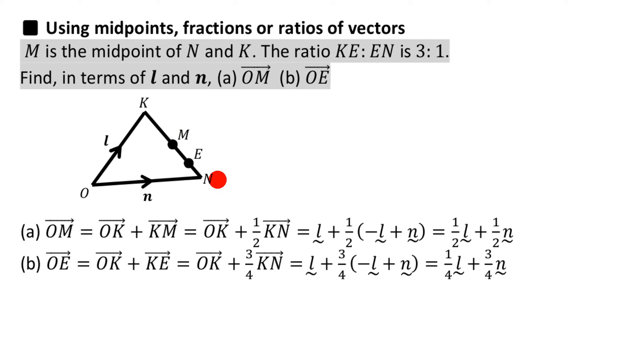This K to N line is split in this ratio 3 to 1. Now if you remember how ratios work, that basically means you've got 3 parts out of 4, because 3 plus 1 gives you 4 parts altogether. And so K to E is 3 out of 4, 3 quarters of the line K to N. And E to N is 1 out of 4 pieces, or 1 quarter of K to N.